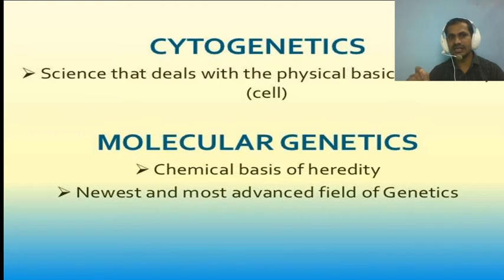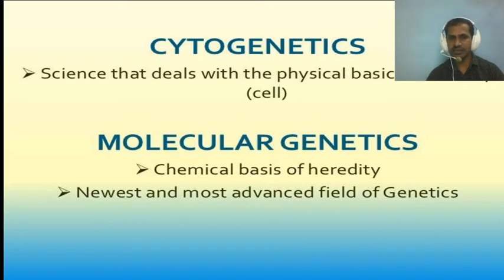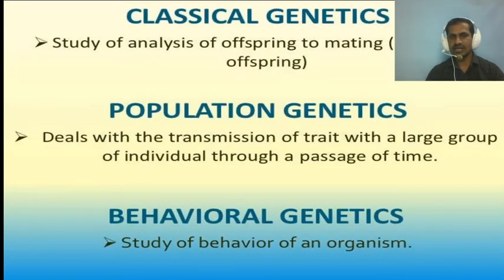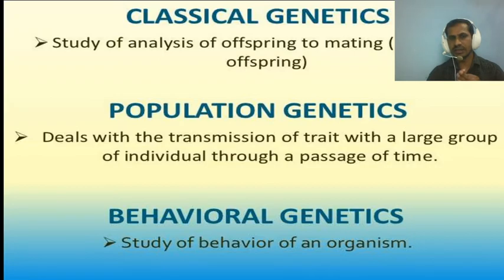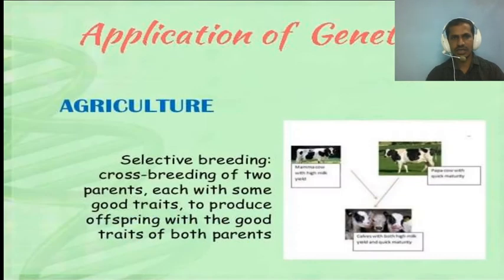Cytogenetics deals with the physical basis of heredity at the cellular level. Molecular genetics deals with the chemical basis of hereditary and is the newest and most advanced field of genetics. Classical or transmission genetics studies the analysis of offspring from matings. Population genetics deals with transmission of traits in larger groups over time. Behavior genetics studies the relationship between genes and behavior.